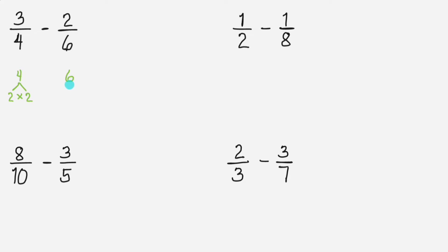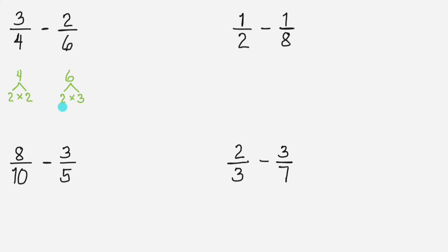Now let's find the prime factors of 6. Let's think of numbers that if we multiply, the product is 6. We can multiply 2 and 3. 2 times 3 equals 6. 2 is a prime number and 3 is also a prime number, so these are the prime factors of 6.